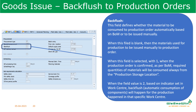The backflush indicator is available in the MRP2 view of the material master. This field defines whether the material is consumed to the production order automatically based on BOM or manually. When the field is blank, material will be issued manually. When the field is set to value 1, the production order issues materials always consumed from the store location. When set to value 2, it will be consumed based on the work center — the work center must also have the backflush setting.